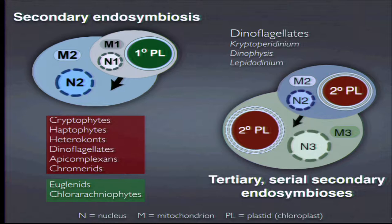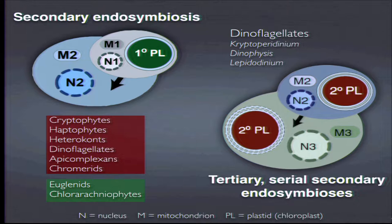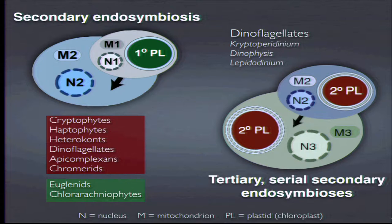There are a large number of lineages known to have acquired photosynthesis by this mechanism. For our purposes today, there are just two distinct sources of secondary endosymbionts: algae that have engulfed red algal endosymbionts, and cases where green algal endosymbionts have been integrated. There are also examples of tertiary endosymbiosis — the dinoflagellate algae are particularly adept at these higher-order endosymbiotic events — but we won't dwell on those today.